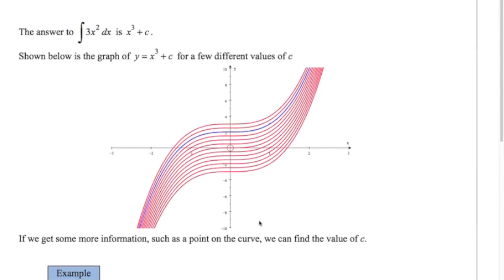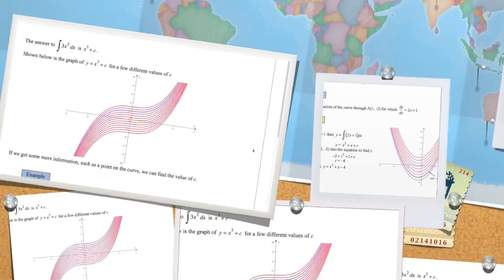Just to explain more this idea of adding c onto the end. So if we integrate three x squared, we get x cubed plus c. So if I look at the graph of x cubed plus c, for a few different values of c that I've drawn there. You see if you do the derivative there, we get three x squared, no matter what the value of c is. So we get a whole family of curves here, really. And we may be given some more information that will help us actually to find out what this value of c is. So this next example is an example of that kind of question.